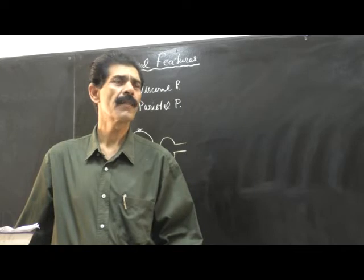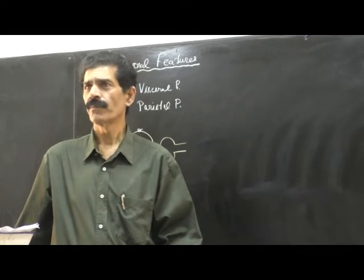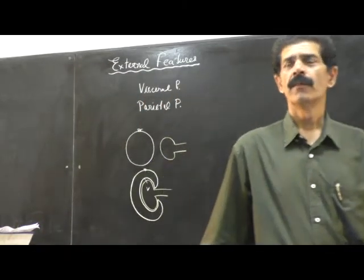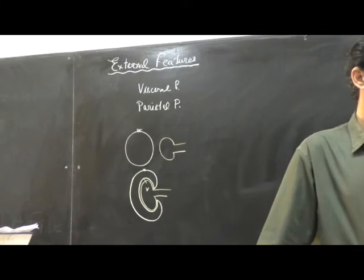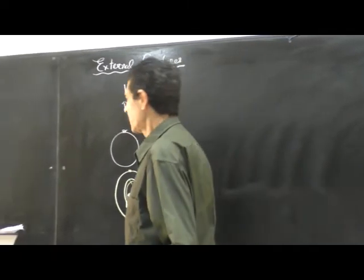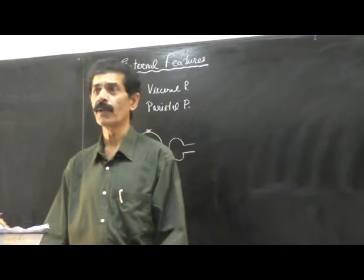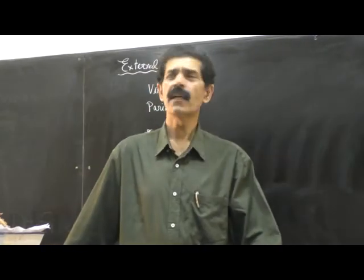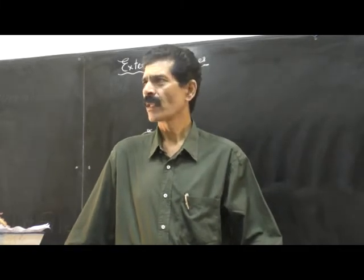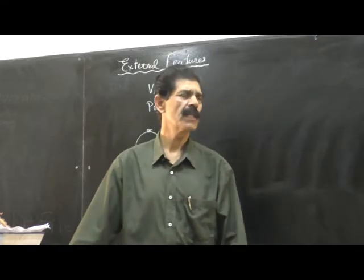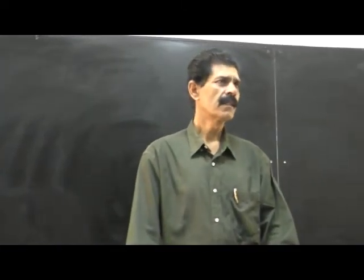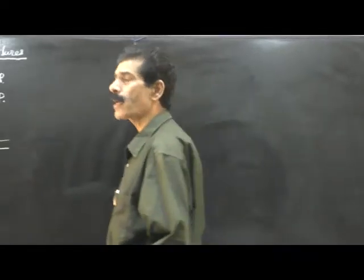All three — pleural, pericardial, and peritoneum — develop from the same source: the intraembryonic coelom. This cavity contains a small amount of fluid because both the lungs and the heart are expansile organs that move independently. To prevent friction between the pericardium and the heart, a small amount of fluid is present, which glistens the surface and makes it frictionless.